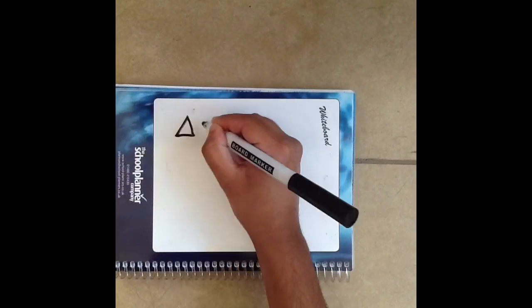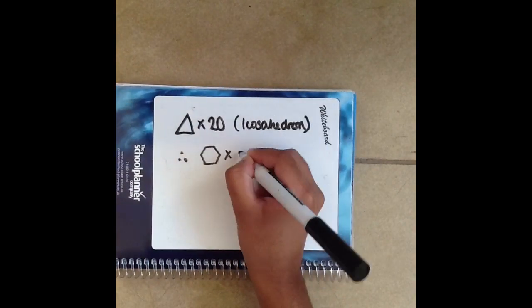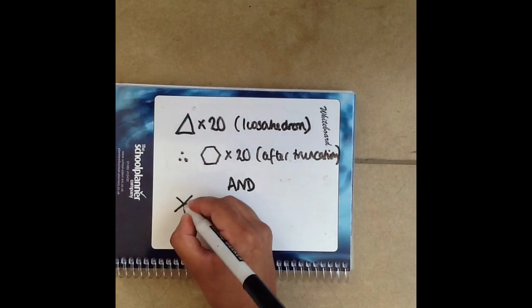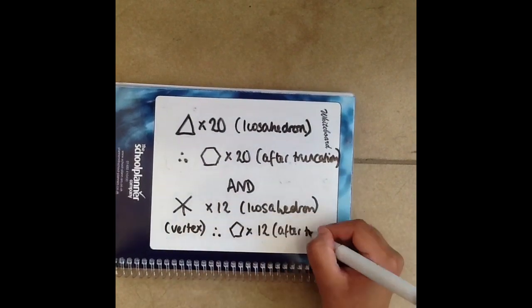How many faces are there? The 20 triangle faces form hexagons and the 12 vertices form pentagons. So there will be a total of 32 faces on the solid.